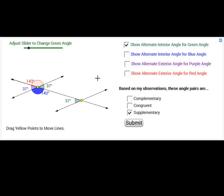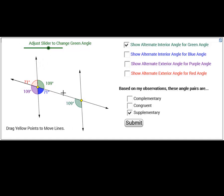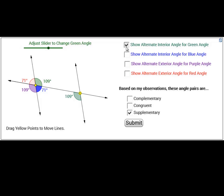Now, here's another app that I've created where you can look at both alternate interior and alternate exterior angles. You can change the green angle by adjusting this slider. You can also move where the lines are relative to each other by dragging the yellow points. Now, right now...